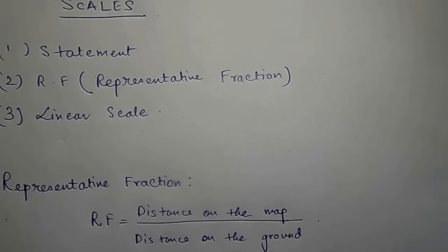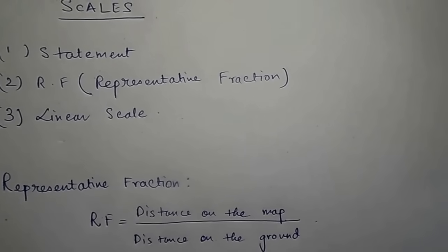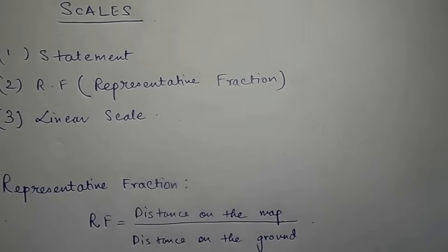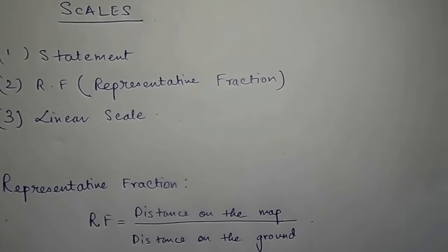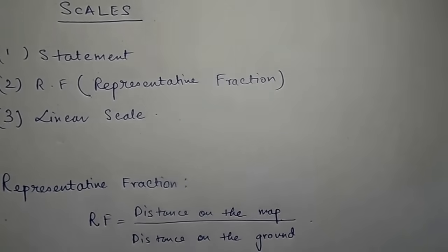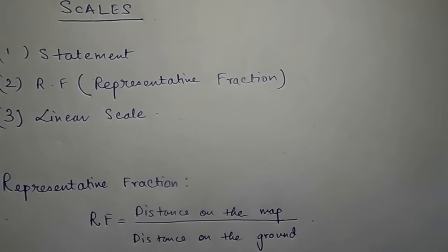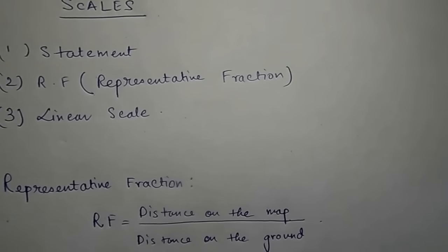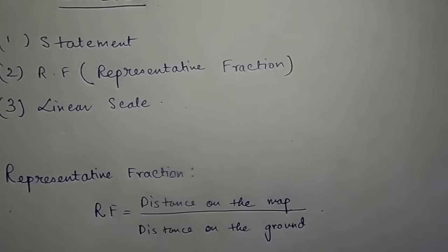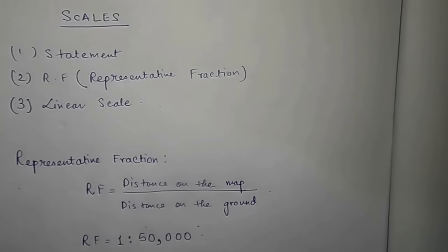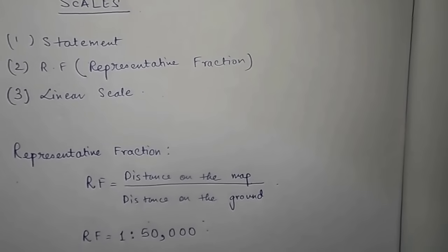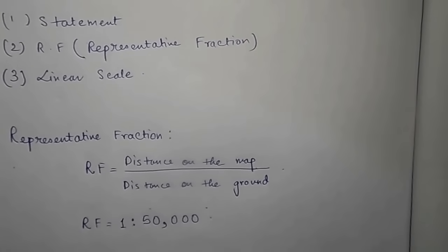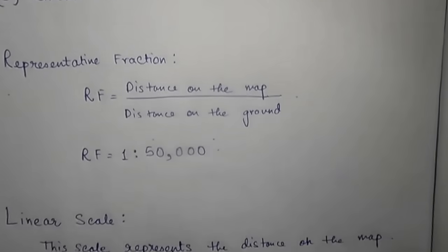First of all, what is representative fraction? RF equals distance on the map divided by distance on the ground. This means that 1cm on the map equals 50,000cm on the actual ground. This is the RF we use, that is 1 to 50,000. Now, what is linear scale? Linear scale represents the distance on the map.